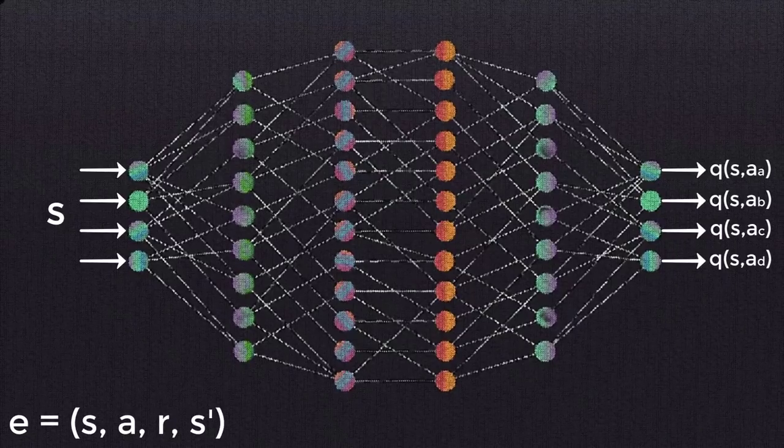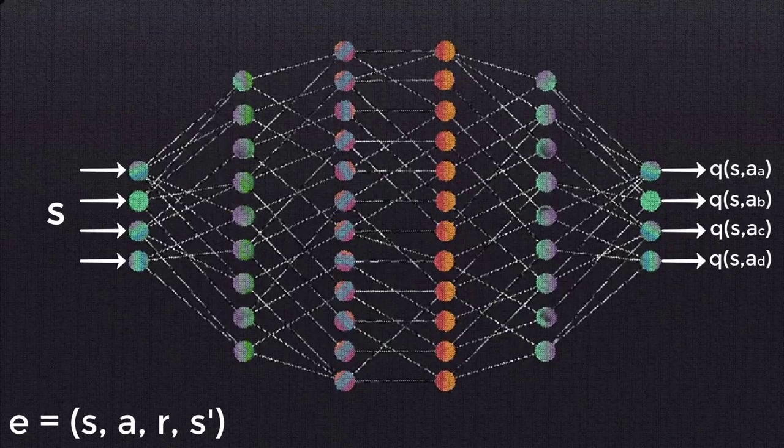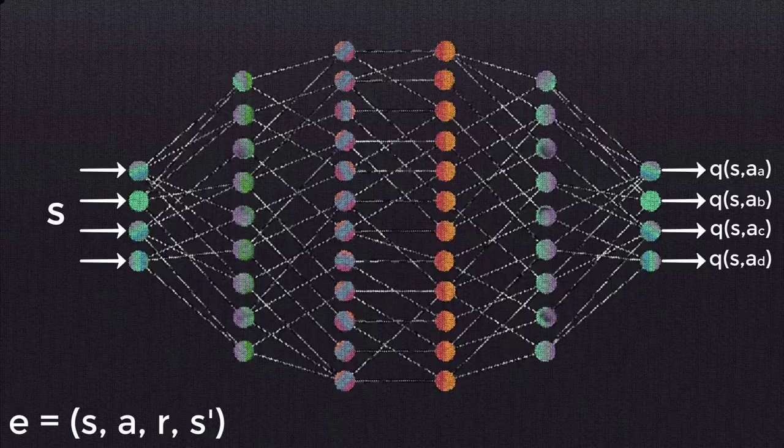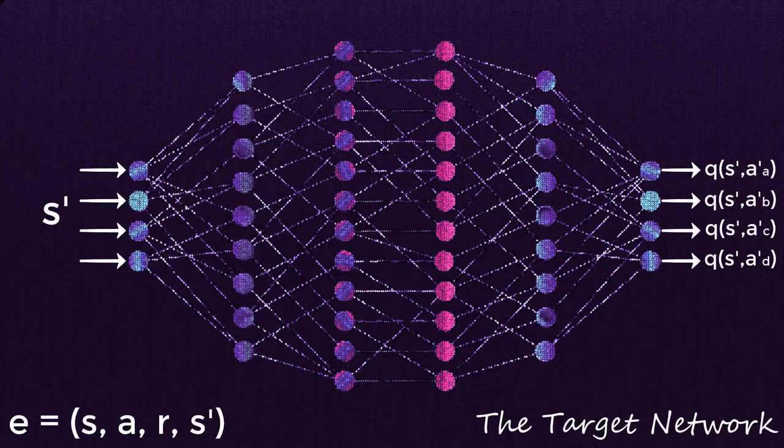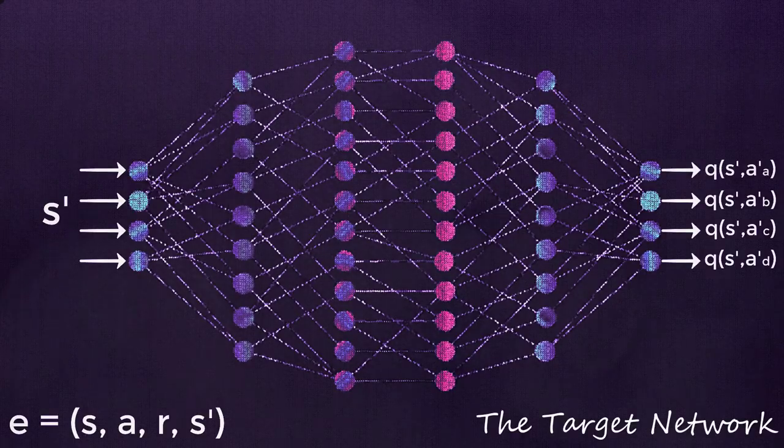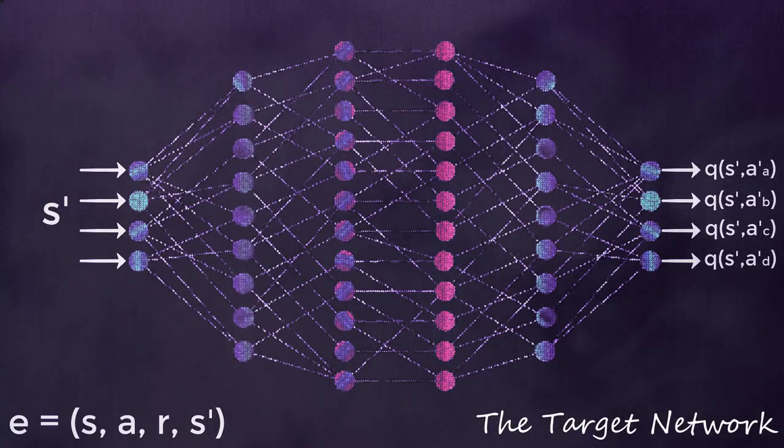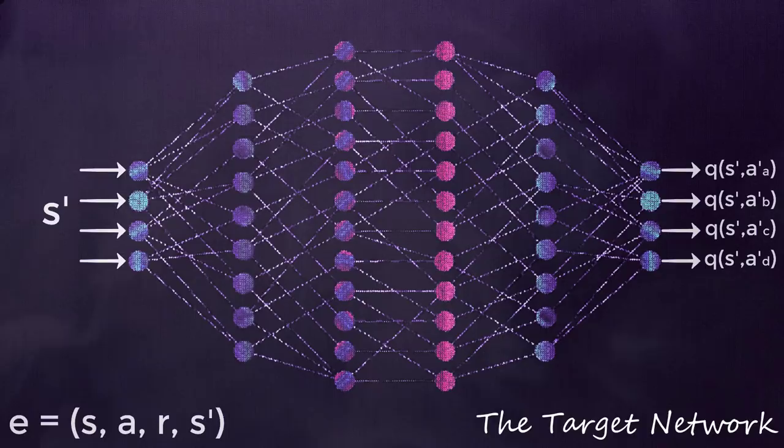Well, here's a perfect time to introduce the second network that we mentioned earlier. Rather than doing a second pass to the policy network to calculate the target queue values, we instead obtain the target queue values from a completely separate network, appropriately called the target network. The target network is a clone of the policy network. Its weights are frozen with the original policy network's weights, and we update the weights in the target network to the policy network's new weights every certain amount of time steps.